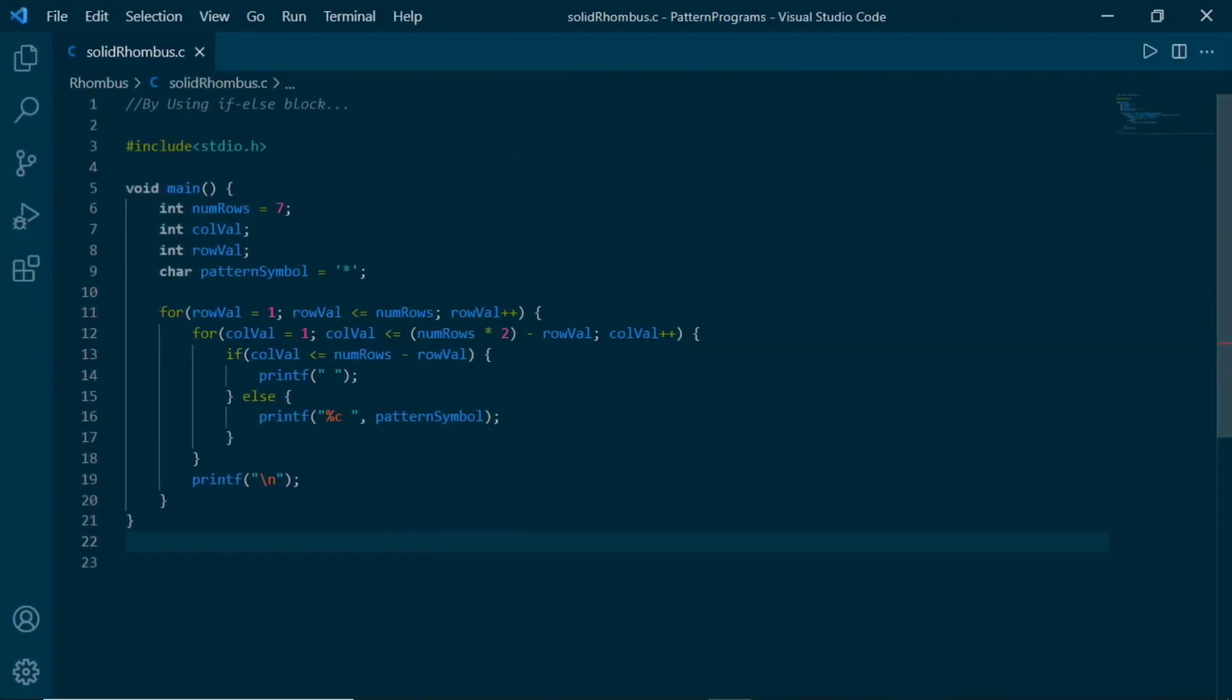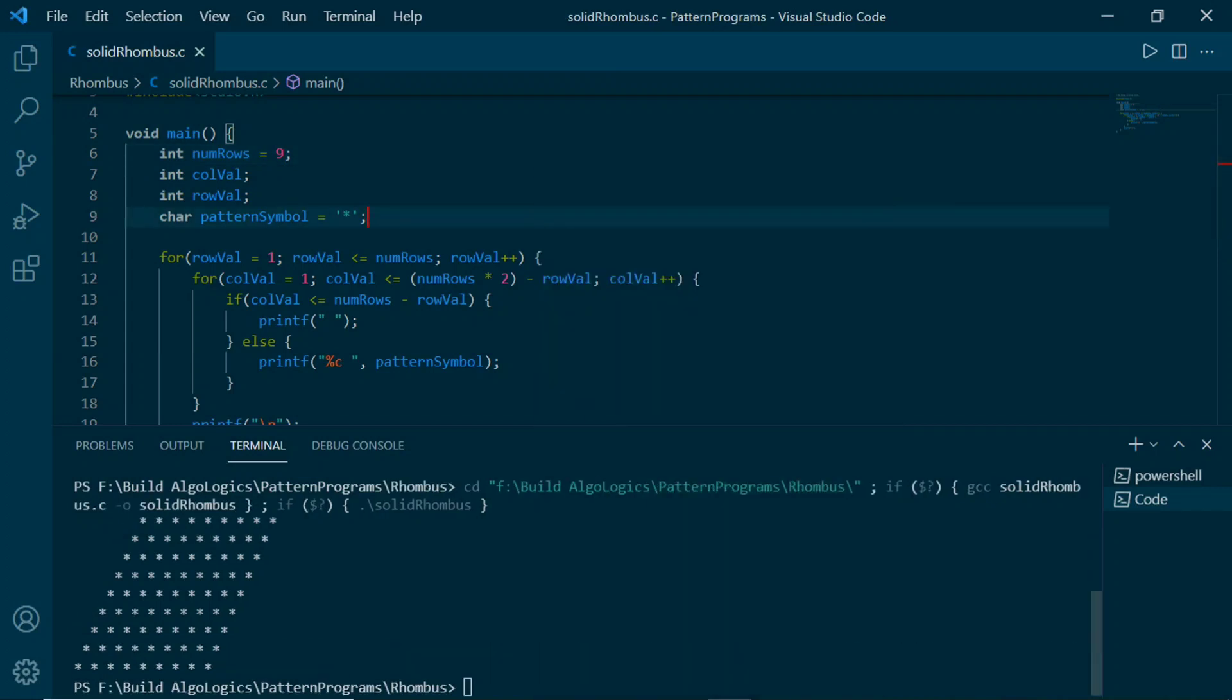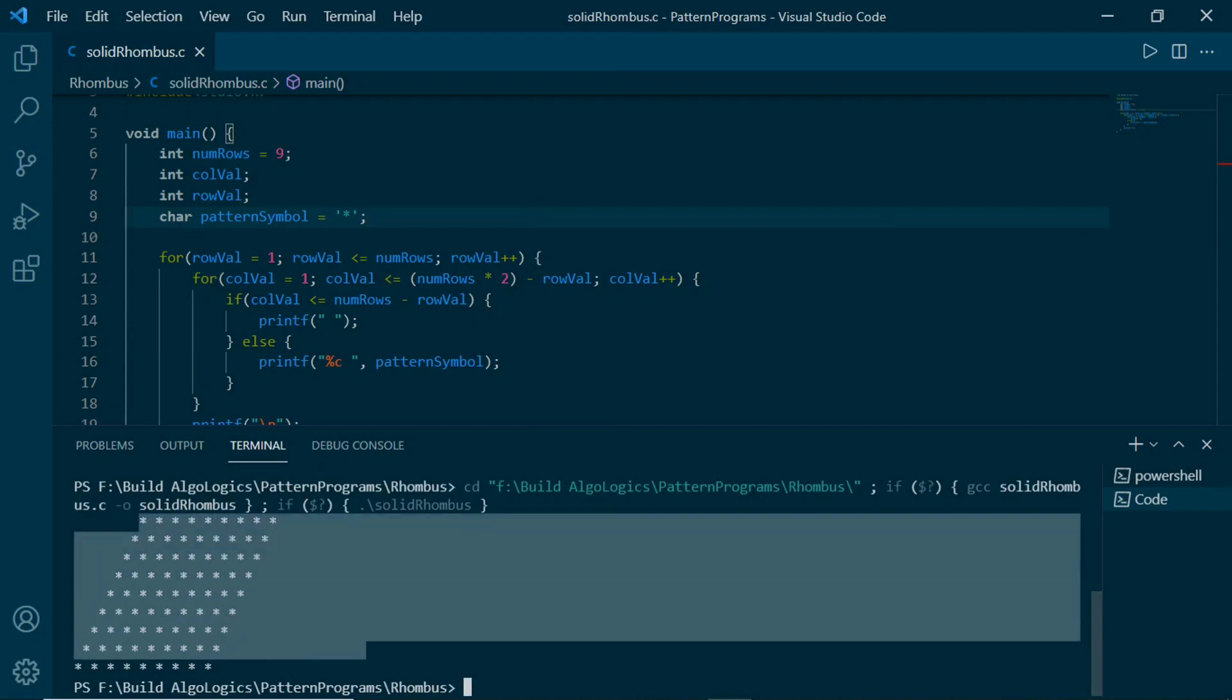Now let's write our code for this. This is the condition that we derived earlier. Now run this code where value of numRows is 7. We get our rhombus printed here. This will work for any values of numRows. Now change this value to 9. Let's see how it is printed. We get our rhombus printed here. This is our first solution to solve this pattern.